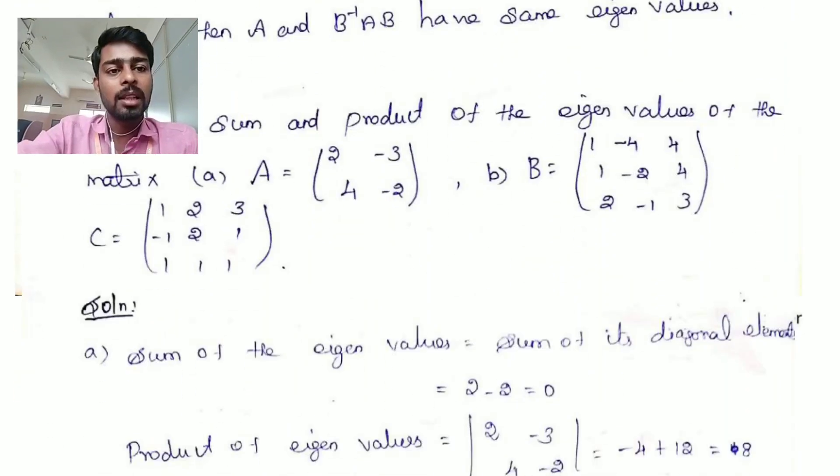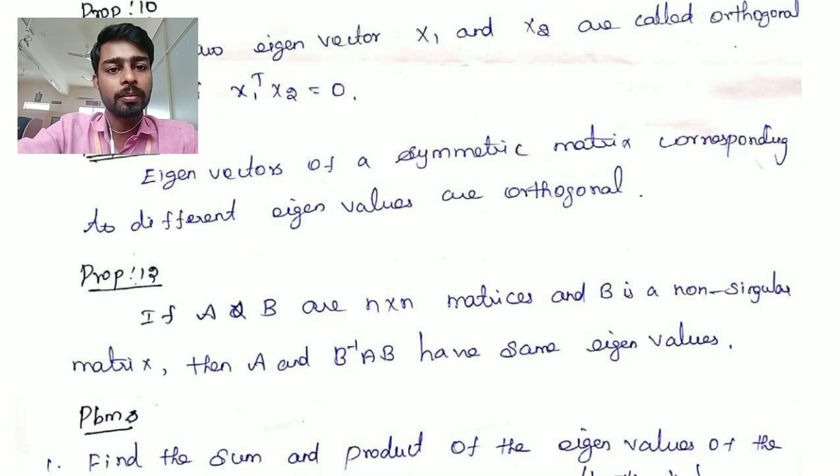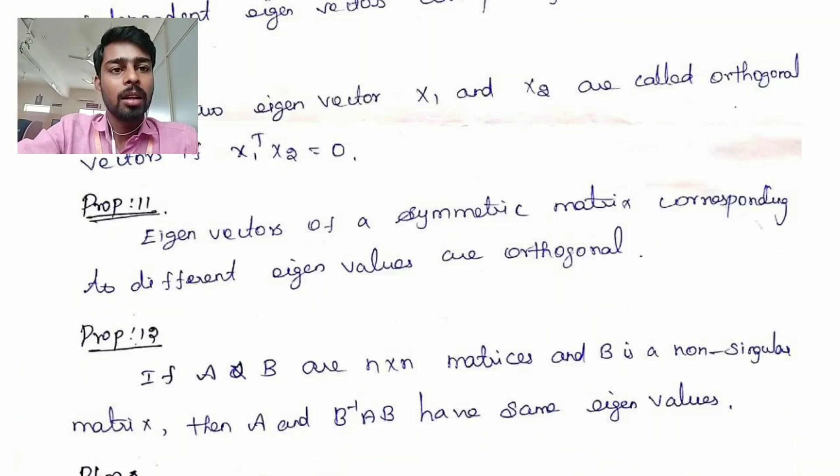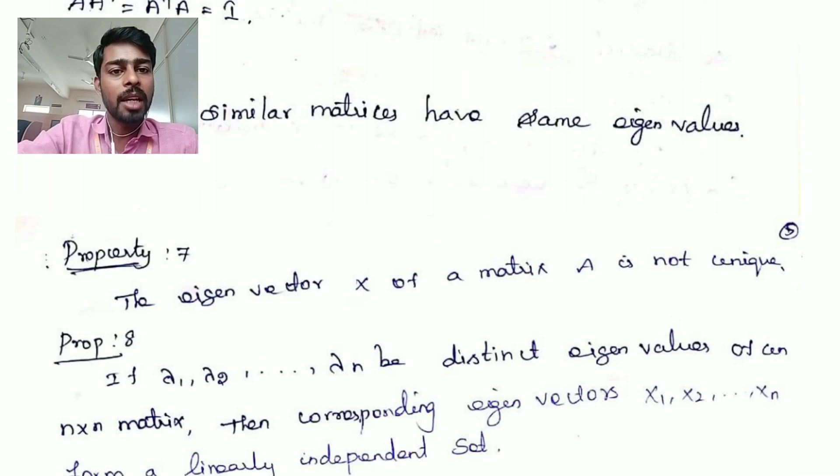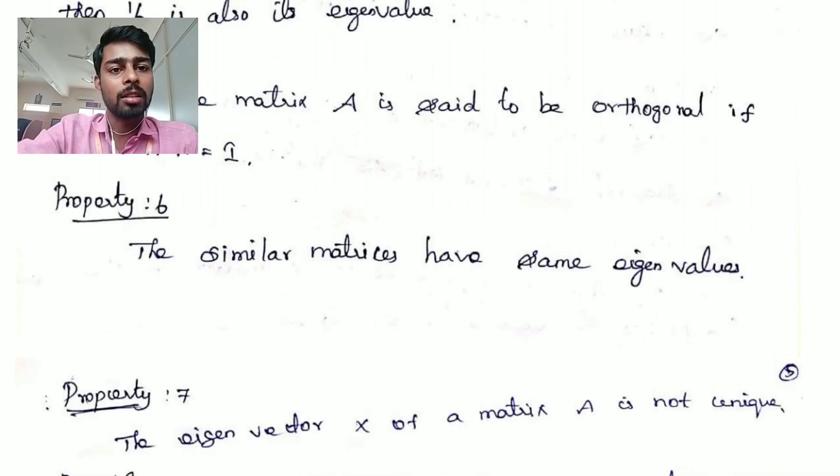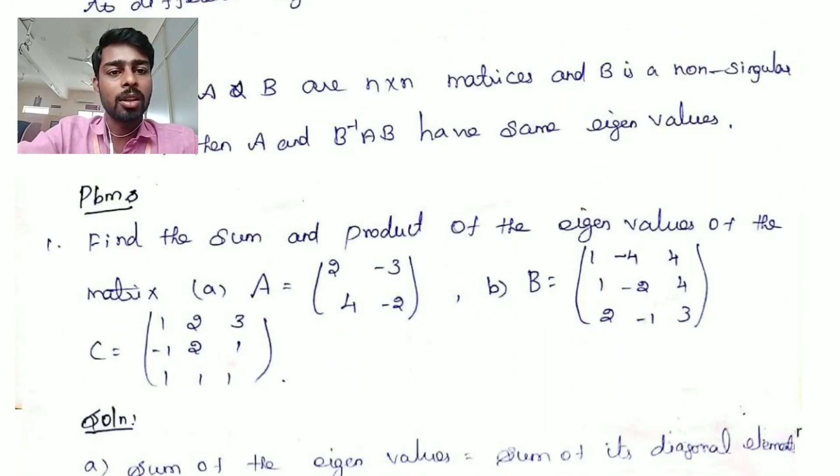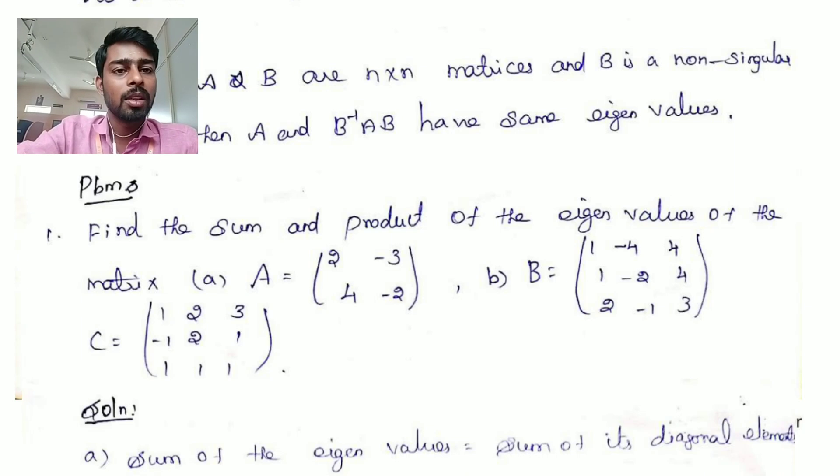We also discussed the 12 properties of the eigenvalues and eigenvectors of the matrix. In this lecture video, fully based on sums, based on the properties of lecture video. First, find the sum and product of the eigenvalues of the given matrix.